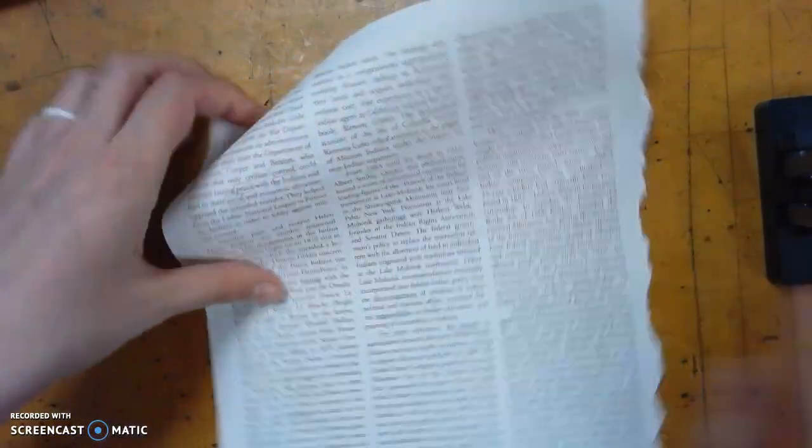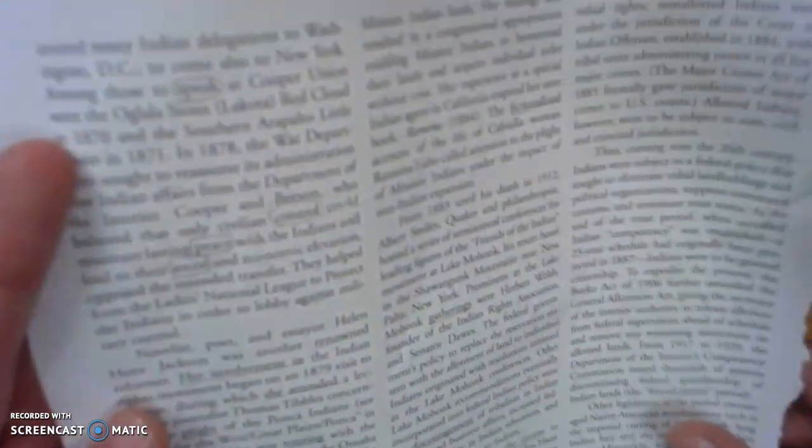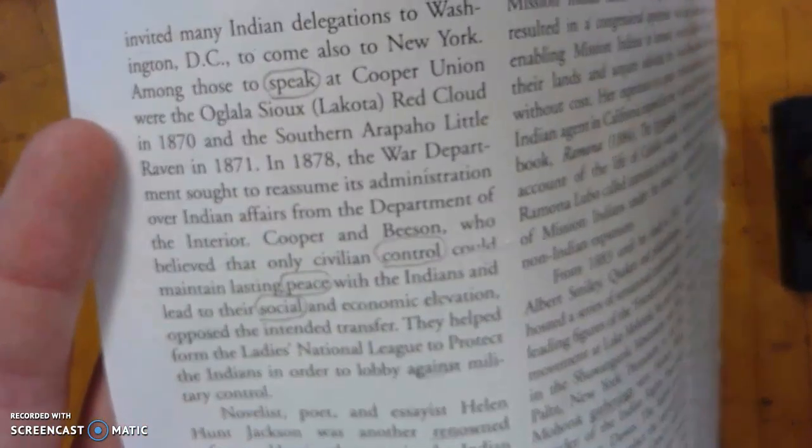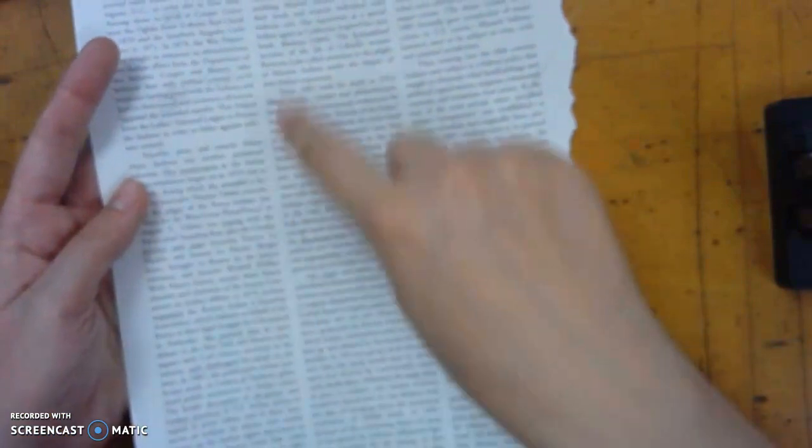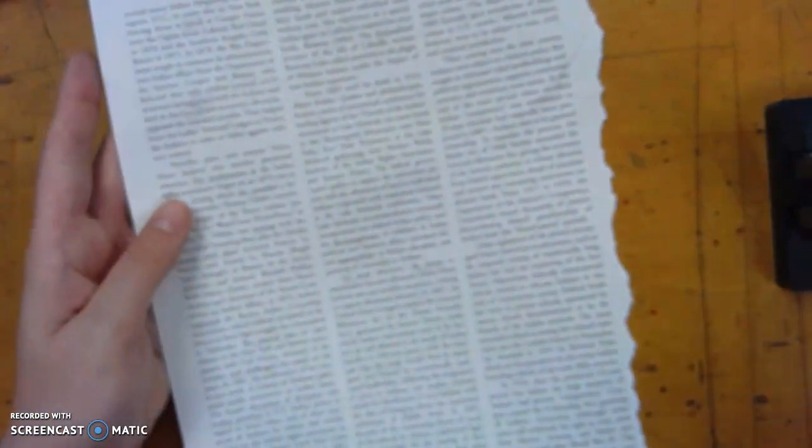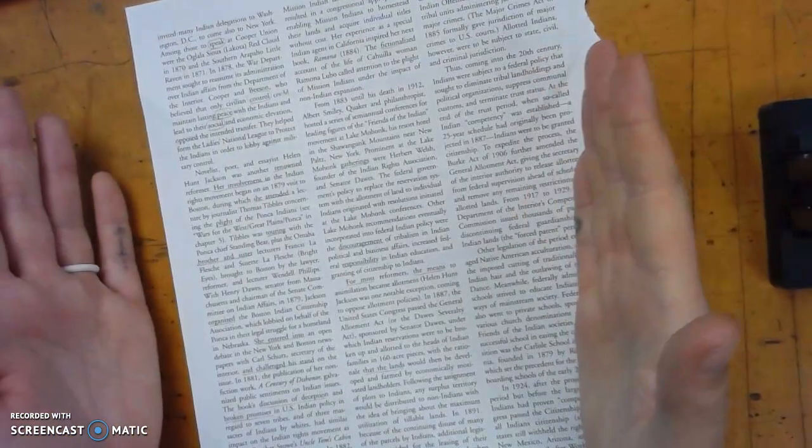All right, so that's just an example. So these are the words that I circled. Let me zoom in. Speak, control, peace, and social. Then I would go through the whole page and pick out the best words that represent who I am.